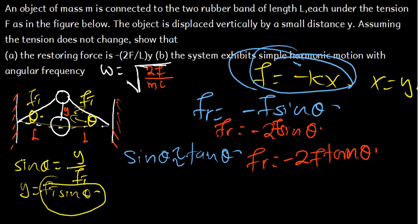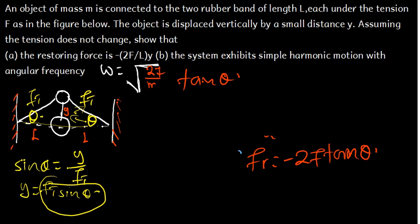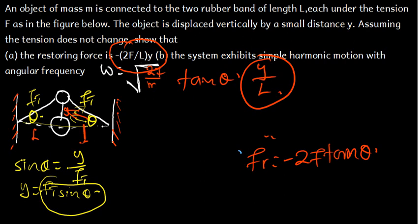From the triangle formed, tan θ equals opposite over adjacent. The opposite side is Y and the adjacent side is L (half the length of the string), so tan θ equals Y over L. We substitute this in, replacing tan θ with Y/L, giving: restoring force equals negative 2F times (Y/L).